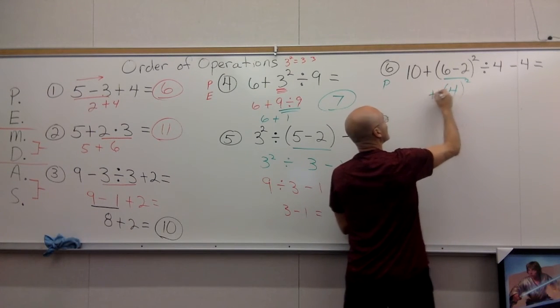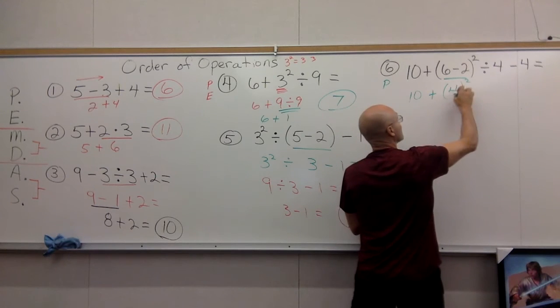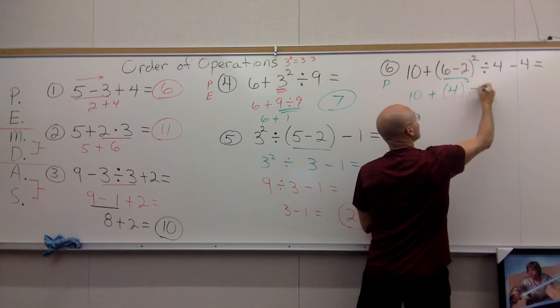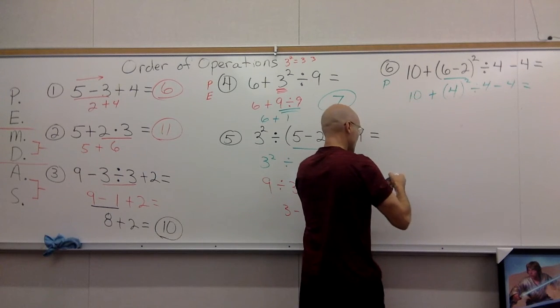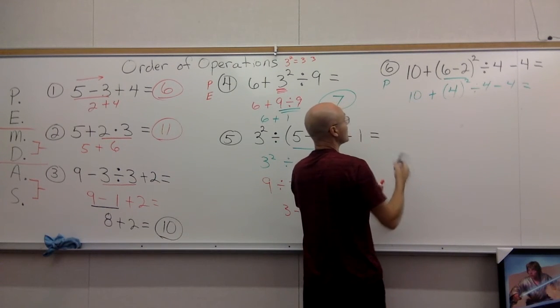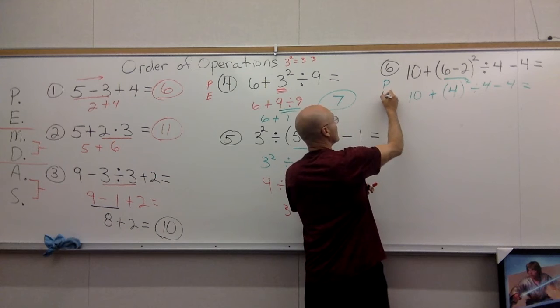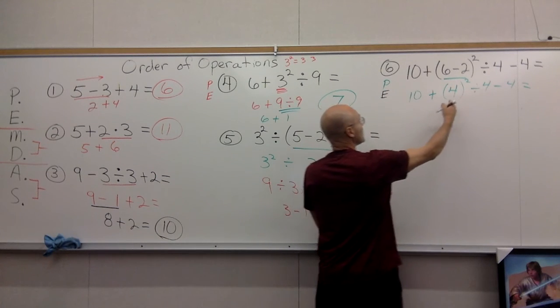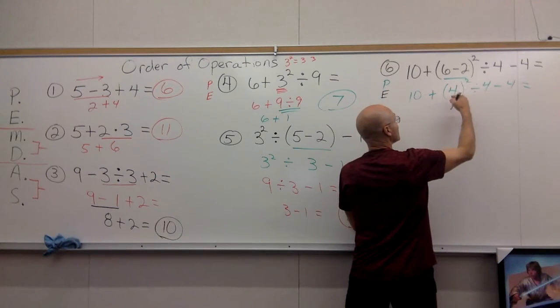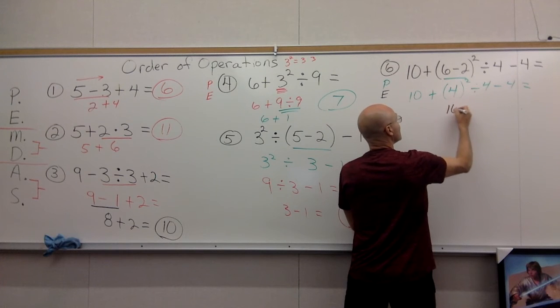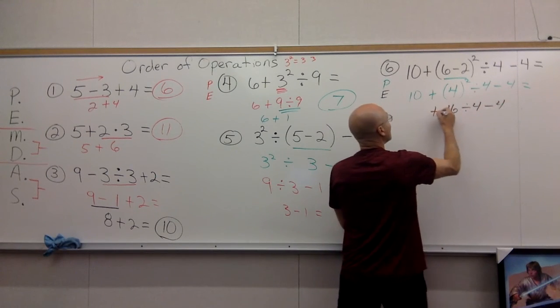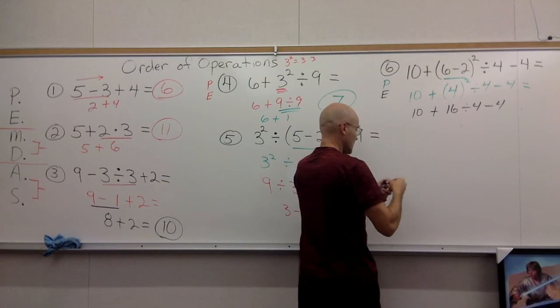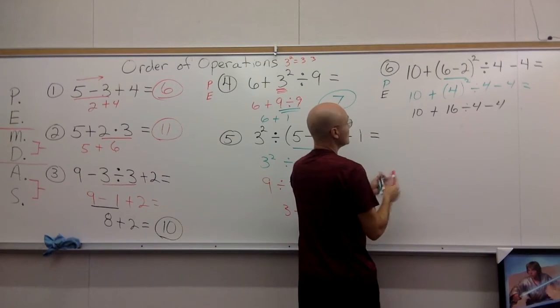Parentheses is going first and we get 4. Now the parentheses really are kind of disappeared, so you're just going to take 4 to the second power. Make sure to rewrite everything. Now you're going to look for the next thing, which is exponent. 4 to the second power is really 4 × 4, which gives you 16.